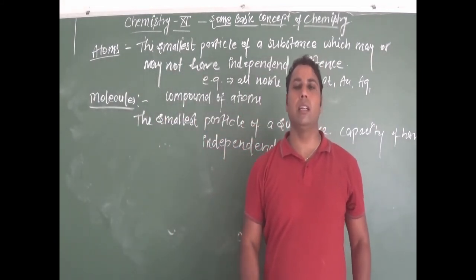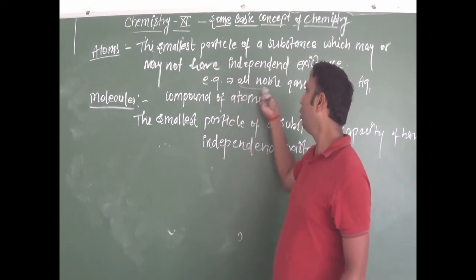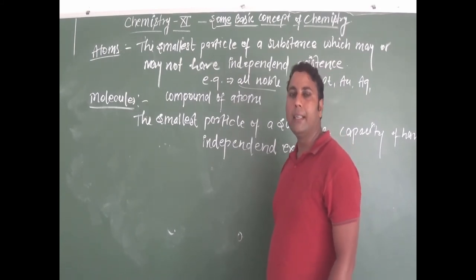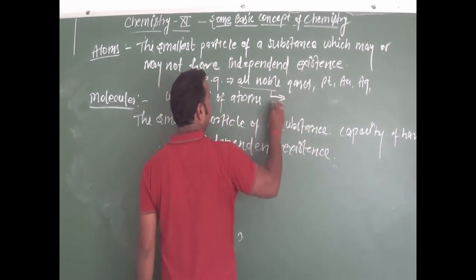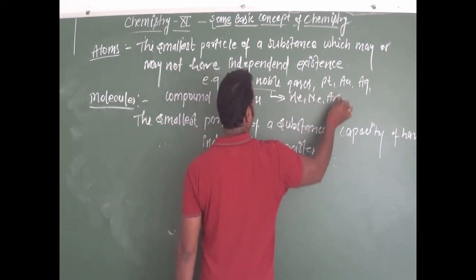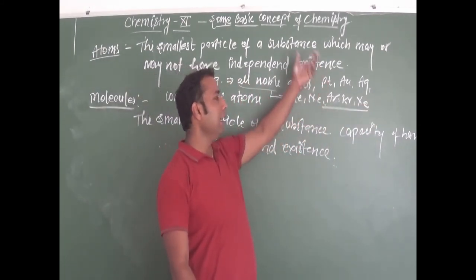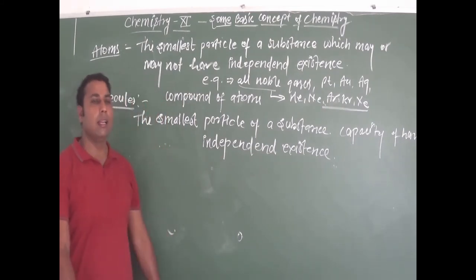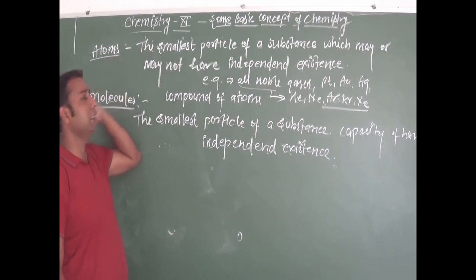Elements like noble gases have independent existence. All the noble gases do not participate in reactions freely. Some examples are helium, neon, krypton, and xenon. These are the noble gases. Except these, independent existence can also be shown by platinum, gold, silver, and sodium. At least 150 elements are there in the periodic table which have independent existence. So all these are atoms.